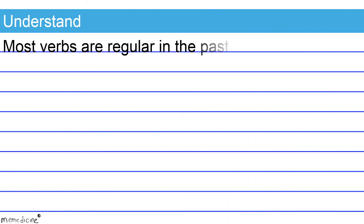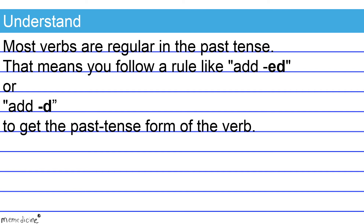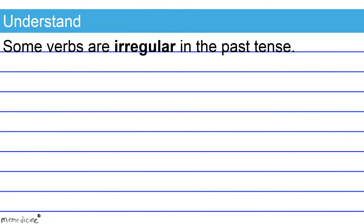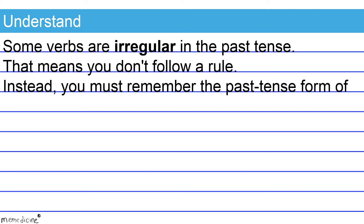Here's what I need you to understand. Most verbs are regular in the past tense — that means you follow a rule like add -ed or add -d to get the past tense form of the verb. Some verbs are irregular in the past tense, meaning you don't follow a rule. Instead, you must remember the past tense form of the verb.